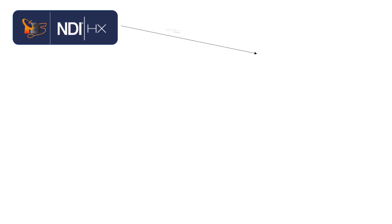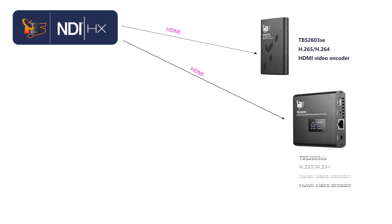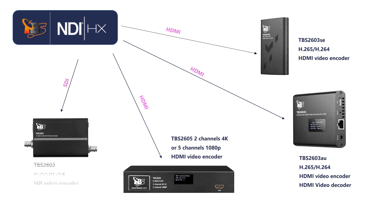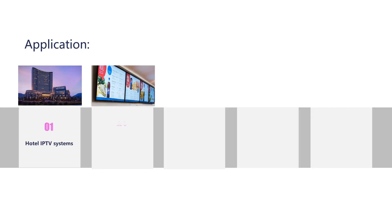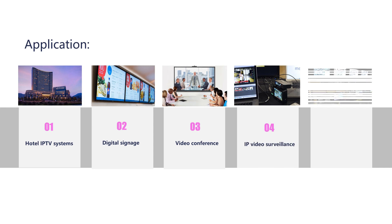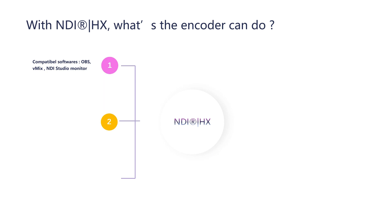Let's see which TBS encoders are supported with NDI|HX. With NDI|HX, what can the encoder do?